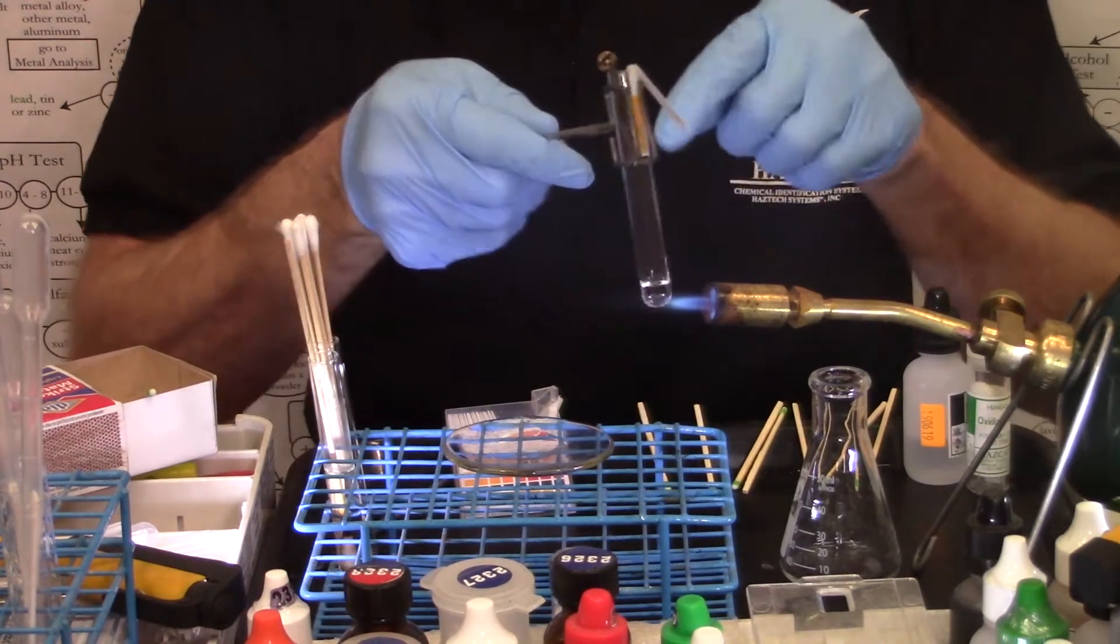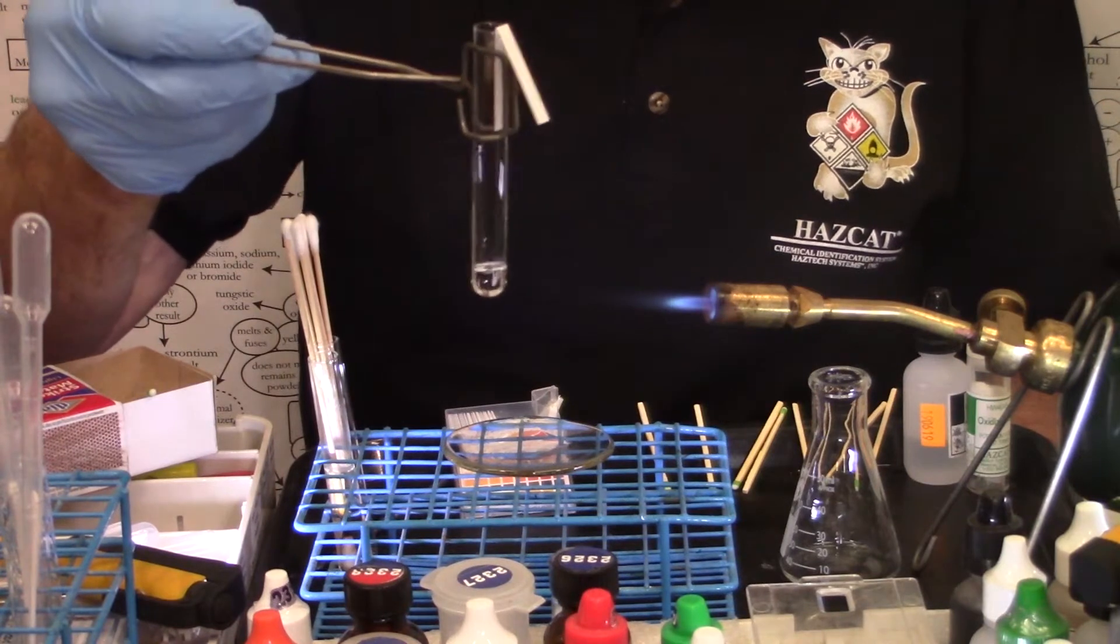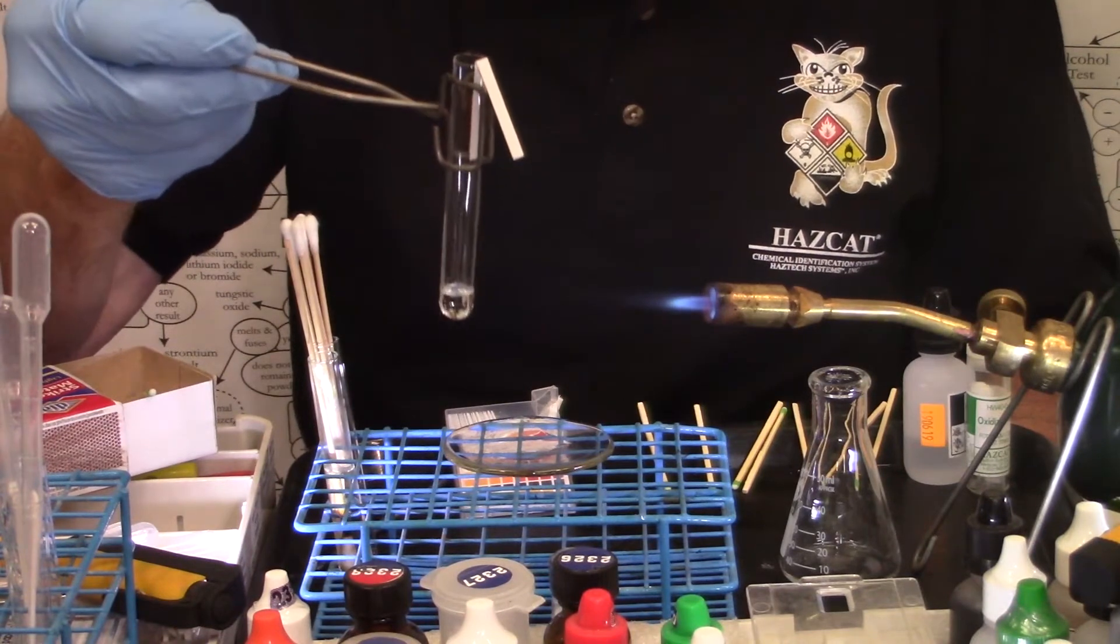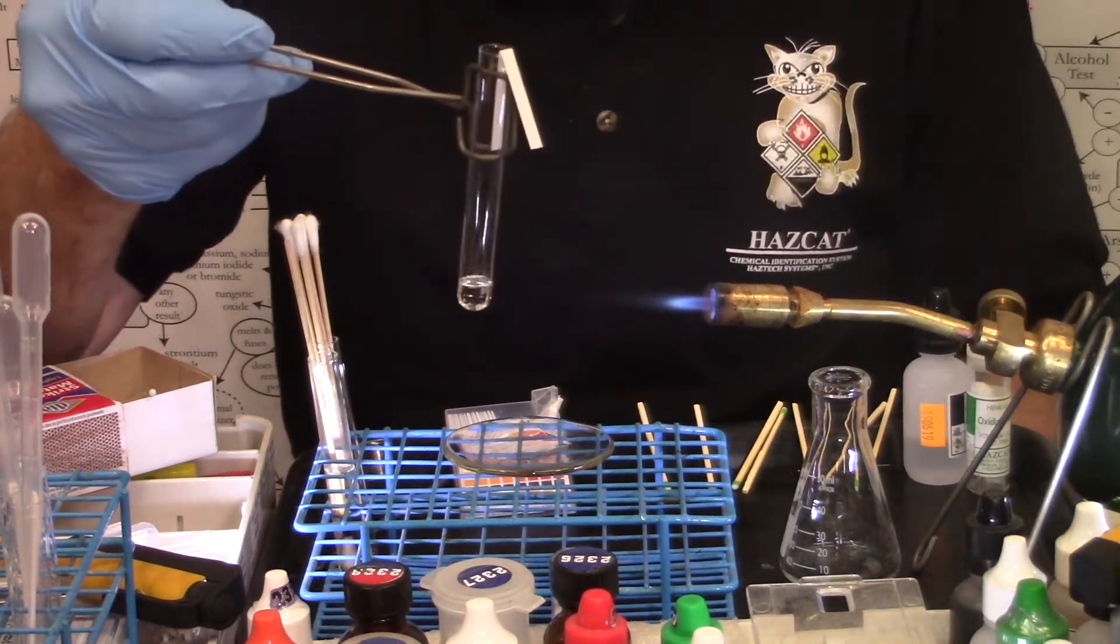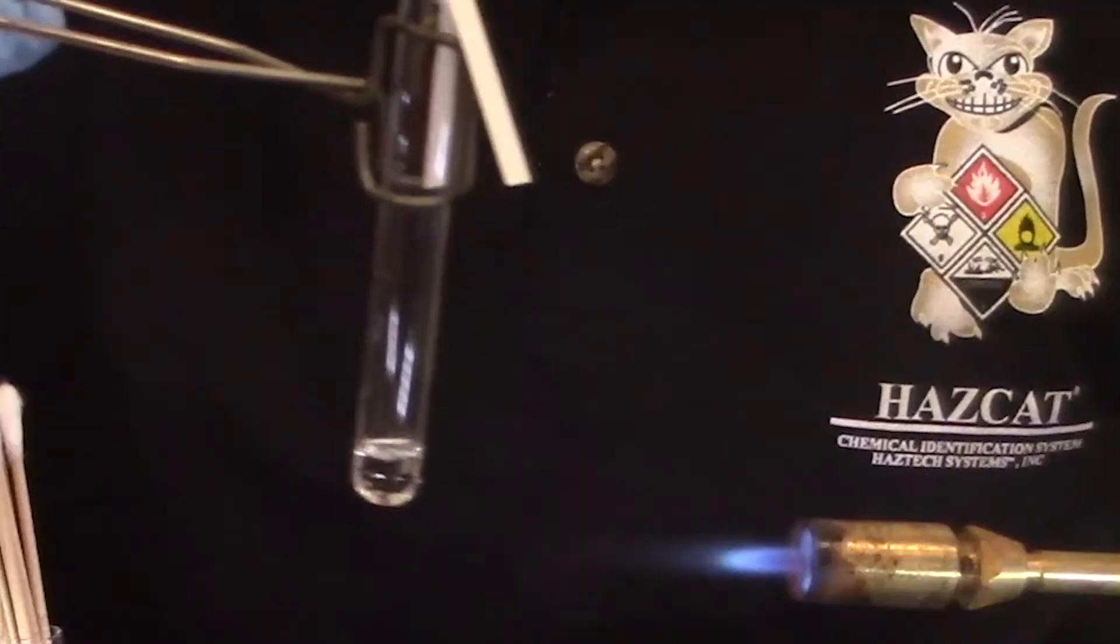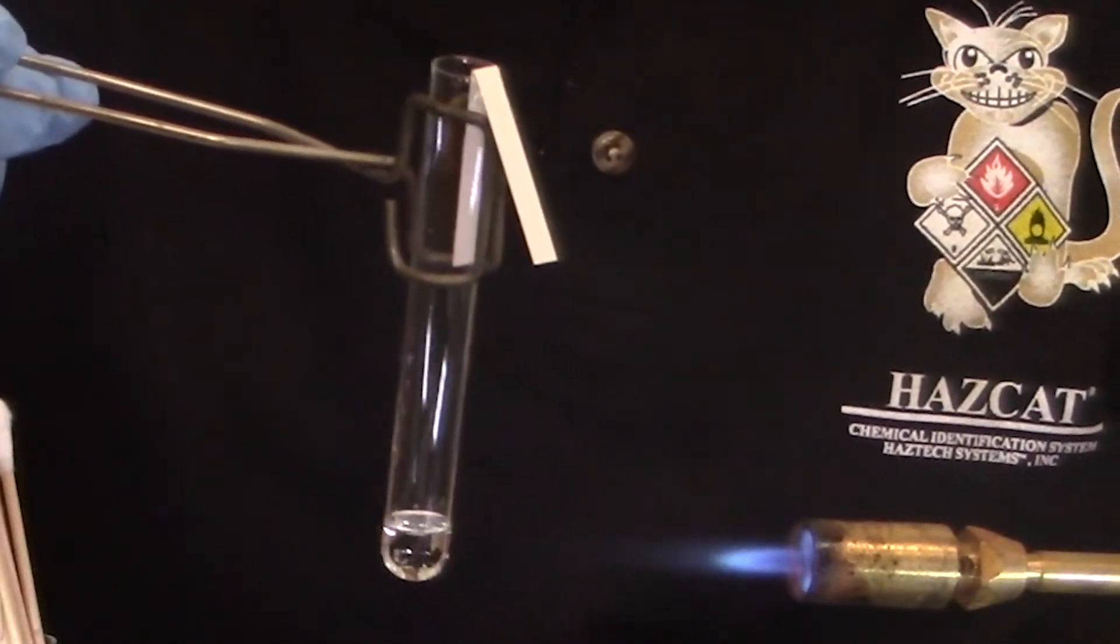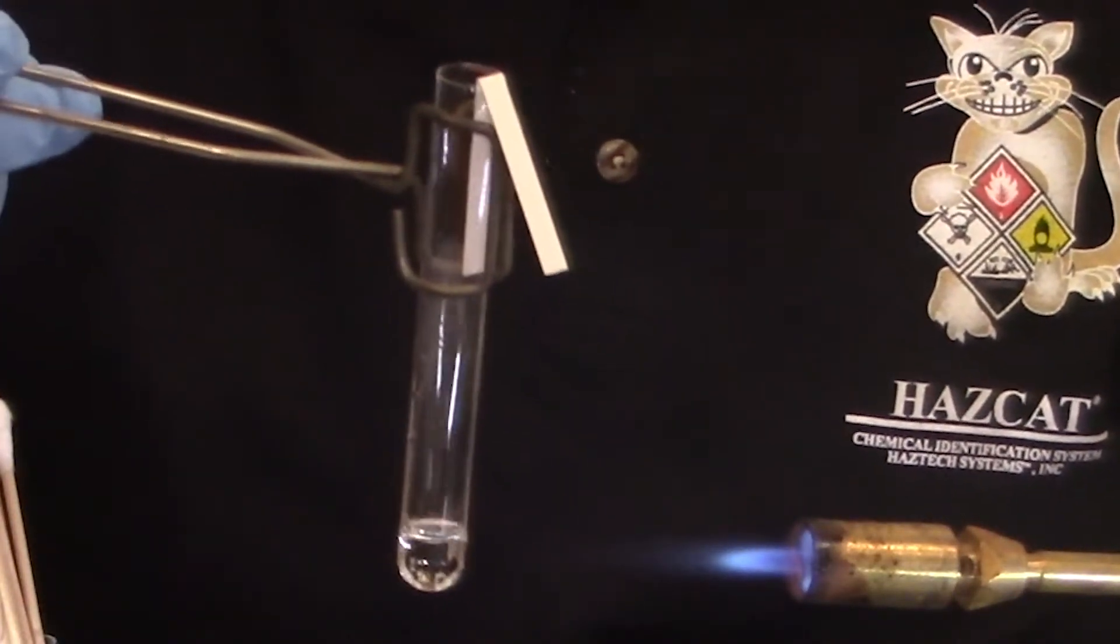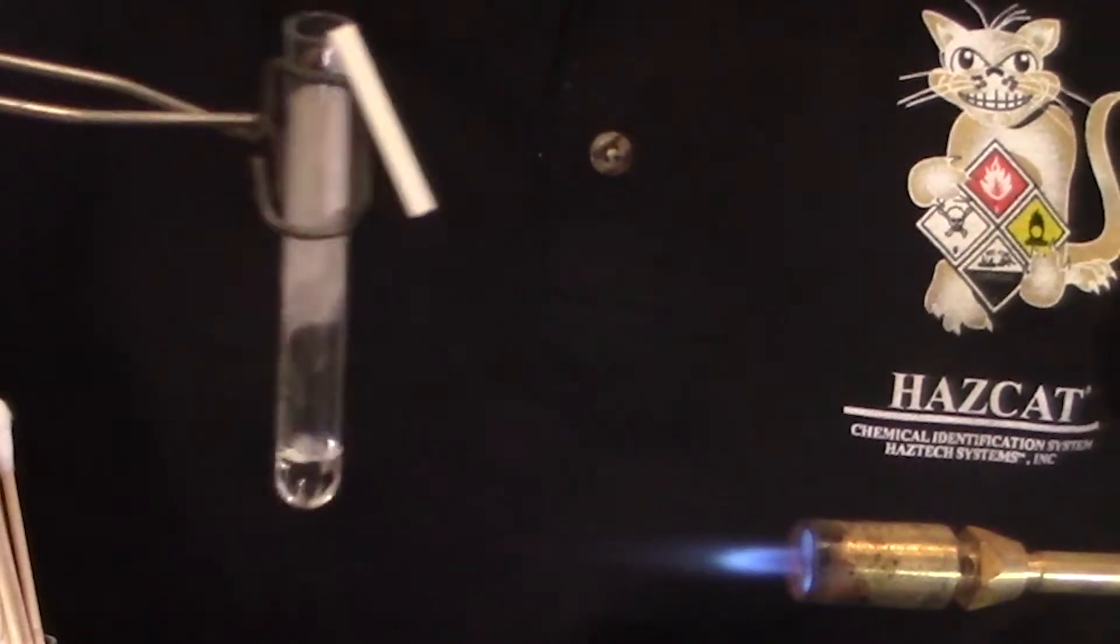Now I take my test tube with my pH paper hanging in it and gently about an inch or so away from the tip of the inner blue cone of the flame. I'm going to warm up the liquid while I watch the pH paper. When you heat a liquid, you always try to keep the heat above the surface of the liquid, heat it from the top down, never get underneath it, it could bump, boil, and shoot liquid out of the test tube.